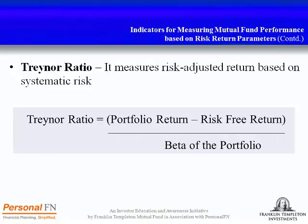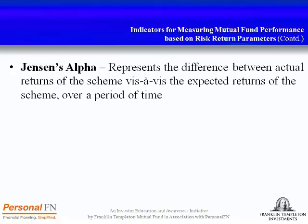The Treynor ratio measures risk-adjusted returns based on systematic risk. It is similar to the Sharpe ratio, with the difference that the Treynor ratio uses beta as the measure of volatility while the Sharpe ratio uses standard deviation. Treynor is calculated as: (portfolio return minus risk-free return) divided by the beta of the portfolio. A scheme with a higher Treynor ratio should be preferred as it indicates the scheme has excess return per unit of systematic risk or beta. Jensen's alpha represents the difference between the actual returns of a scheme versus its expected returns over a period of time. A positive alpha means the fund manager has generated returns in addition to what the benchmark index would suggest, while a negative alpha means returns lower than the benchmark. Alpha thus indicates the ability of the fund manager to generate additional returns for investors.